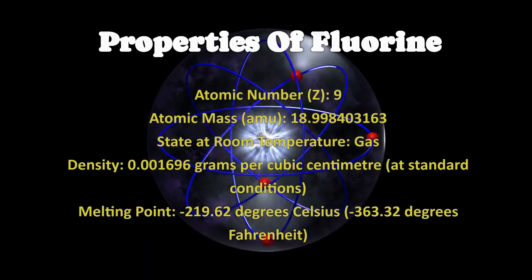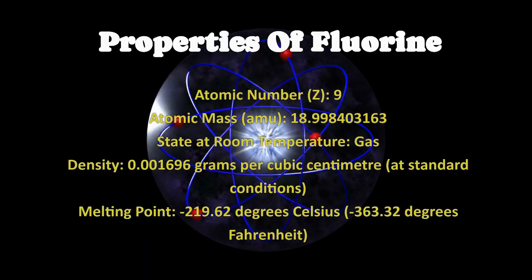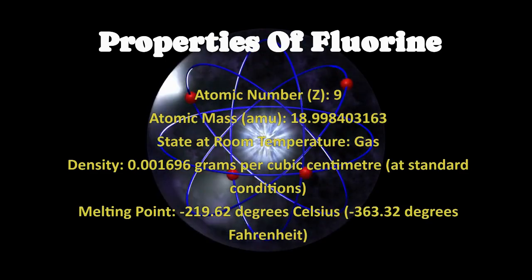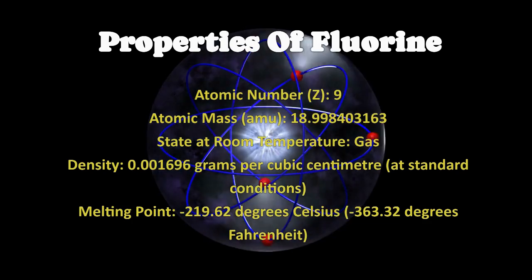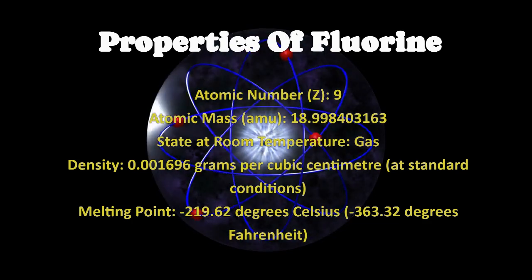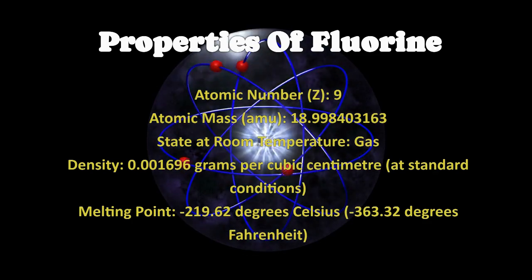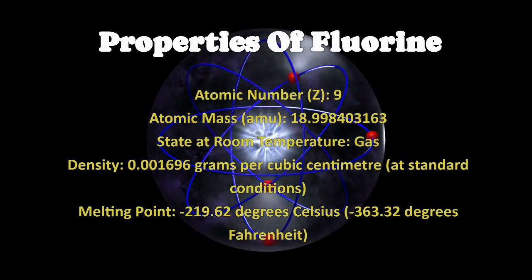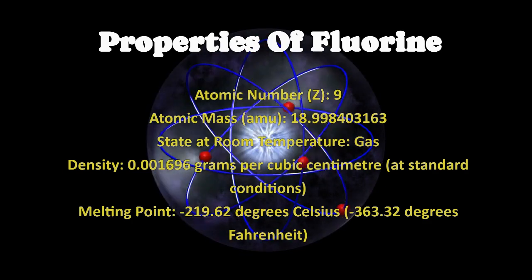Properties of Fluorine: Atomic Number 9, Atomic Mass 18.998403163 AMU. State at room temperature: Gas. Density: 0.001696 grams per cubic centimeter at standard conditions. Melting point: minus 219.62 degrees Celsius (minus 363.32 degrees Fahrenheit).